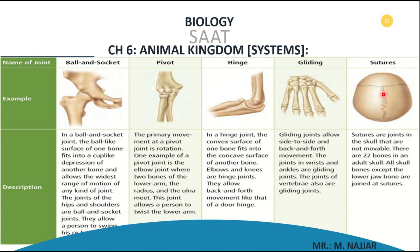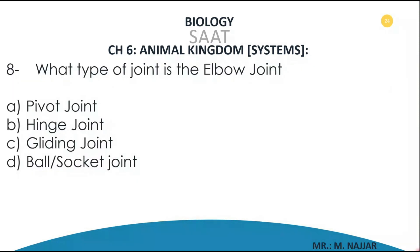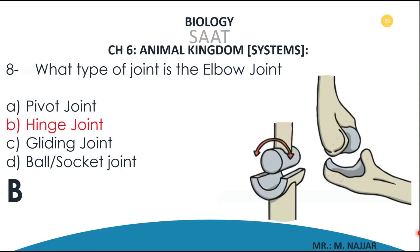Question number eight: what type of joint is the elbow joint? A) pivot joint, B) hinge joint, C) gliding joint, D) ball and socket. It is a hinge joint. There is a convex surface and a concave surface that fits to it — this is the elbow joint, considered a hinge joint. This diagram illustrates the concave and convex surfaces fitting together making the elbow a hinge joint.